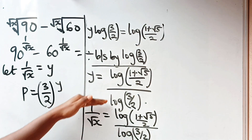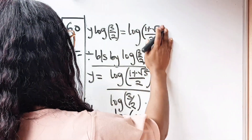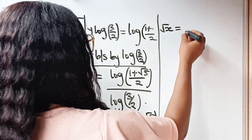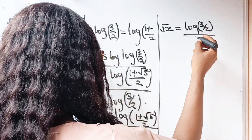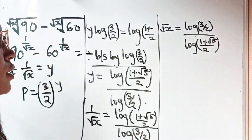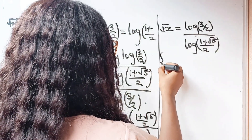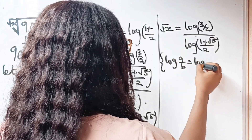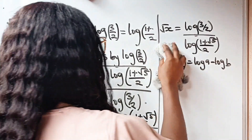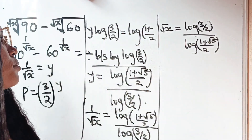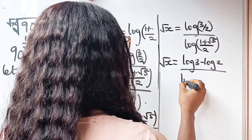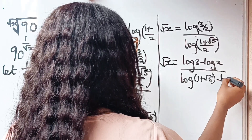Using the rule that log(a/b) equals log a minus log b, we can write: root x equals (log 3 minus log 2) divided by (log(1 + √5) minus log 2).